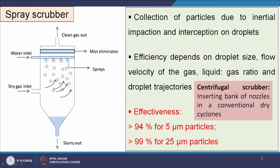This is a spray scrubber — water is sprayed, so water droplets form. From the dirty gas inlet, particles are present, and droplets, which are normally bigger than the particulates, fall down. Because of different mechanisms, the particles are trapped and fall. Collection of particles is due to inertial impaction and interception on droplets. Efficiency depends on droplet size, flow velocity of the gas, liquid-to-gas ratio, and the droplet trajectories. It is greater than 94% effective for 5 µm particles and greater than 99% effective for 25 µm particles.